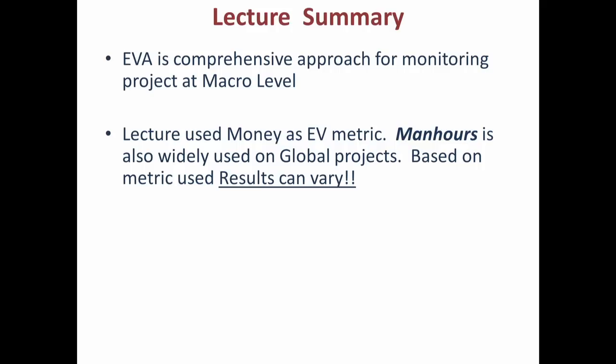Measuring progress based on a money metric versus a man-hour metric can give different results — for example, 40% complete based on money but 60% based on man-hours. This is a subjective element, and a good planning team should have judgment on what is the appropriate metric for their kind of work and project.